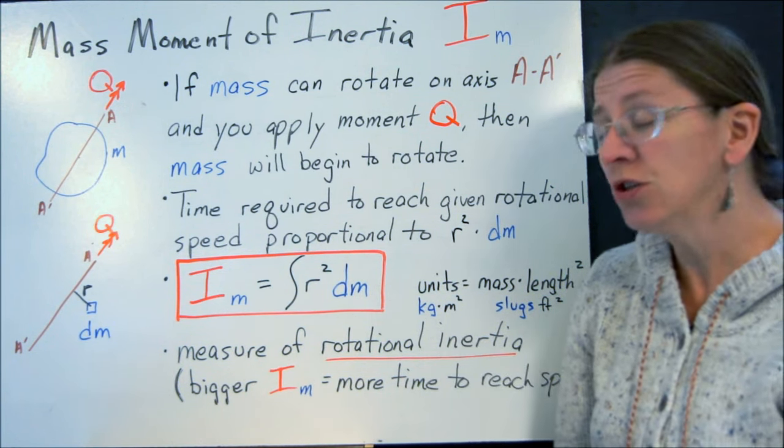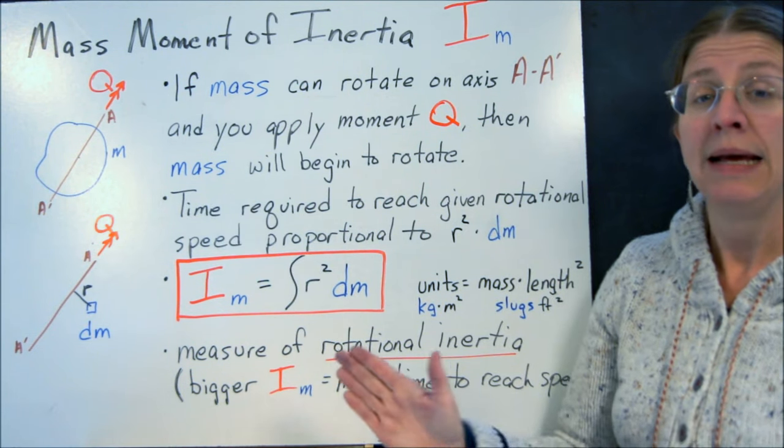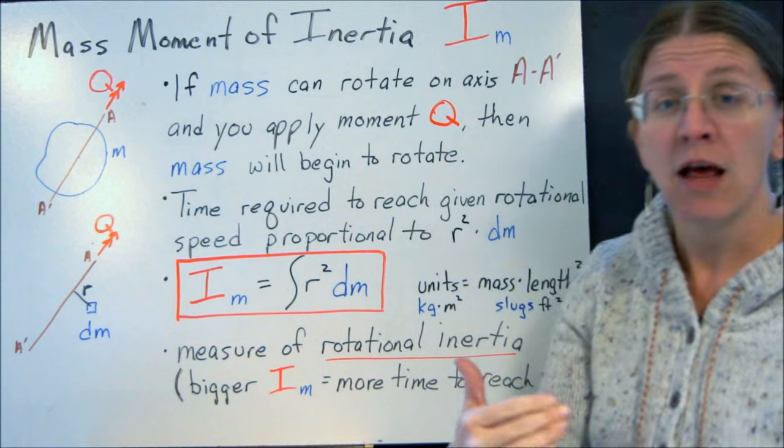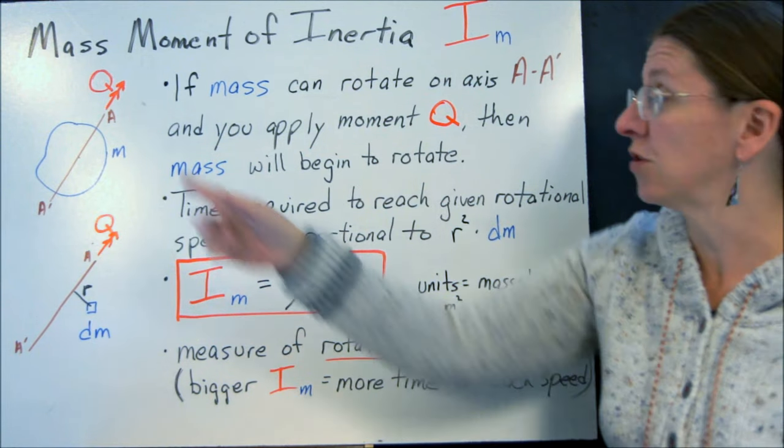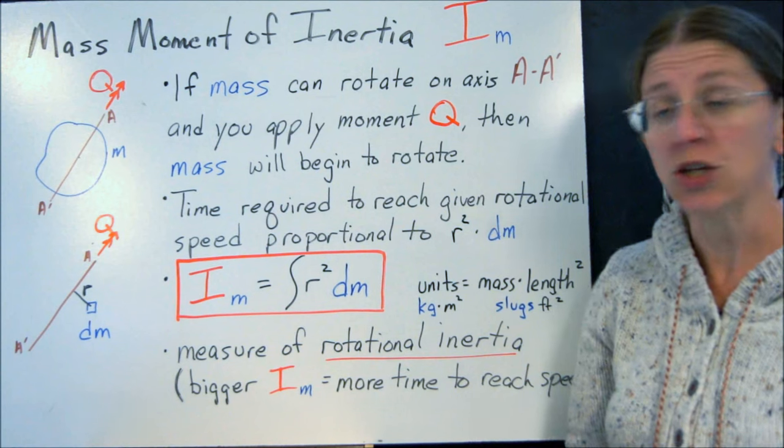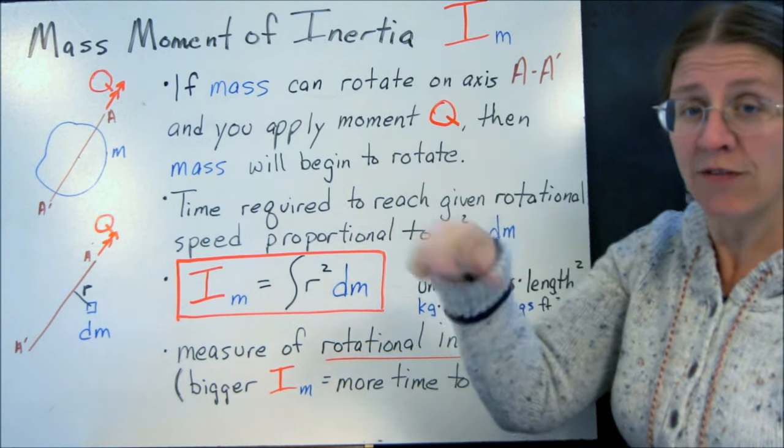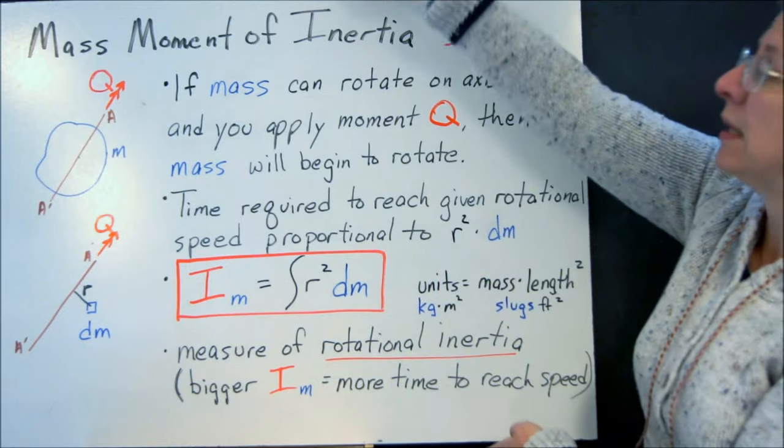The measure of rotational inertia, that's what this is. This is a measure of rotational inertia. So the bigger IM gets, the longer it takes with a certain torque to get up to speed. If you get a very low rotational inertia, a very low mass moment of inertia, then it doesn't take very long to spin it up to speed. It spins easily.